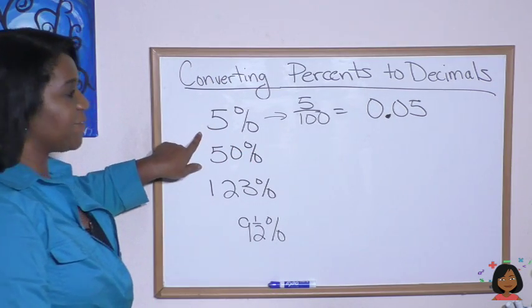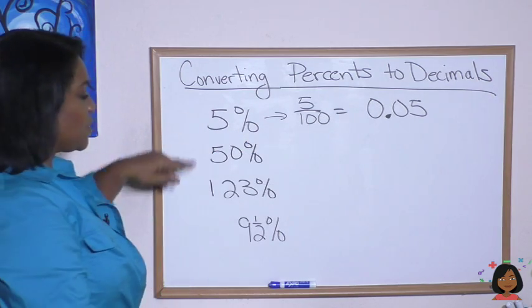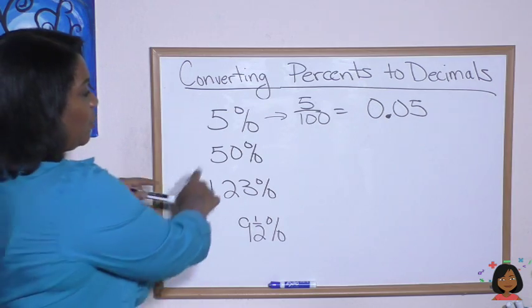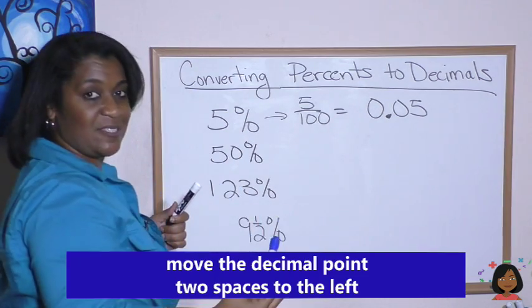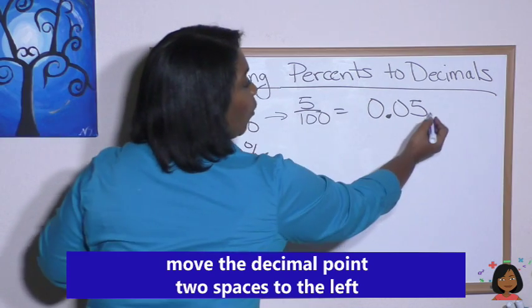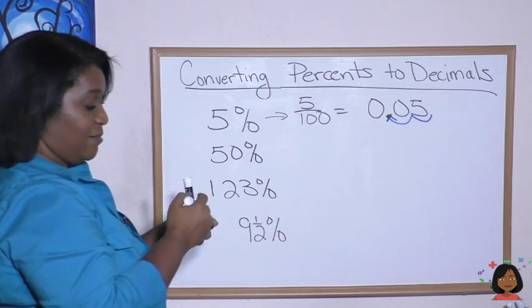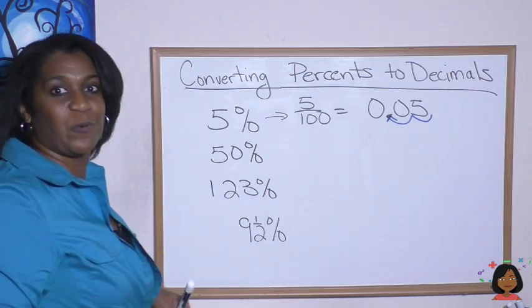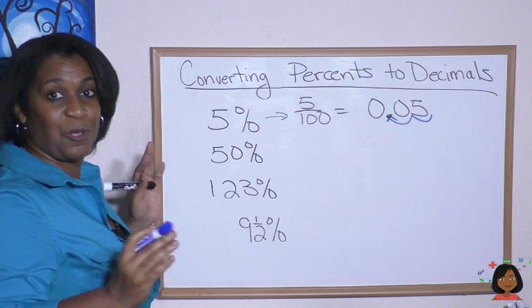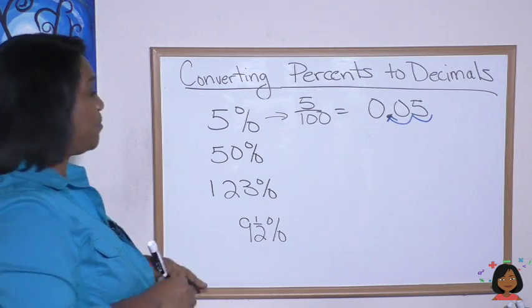Now I want you to look closely at this example. We had a 5 here and we end up with 0.05. So doesn't that just really mean that we've moved our decimal, which is right past the 5, two places to the left? That's how we drop a percent: move the decimal, and now we have an actual proper decimal. Let's try it that way for the rest of the problems.